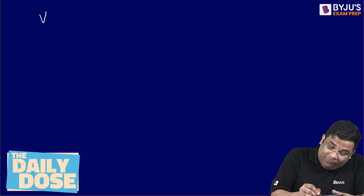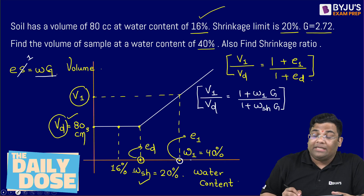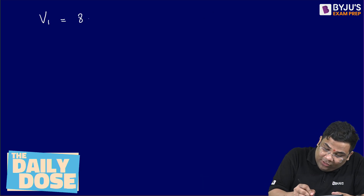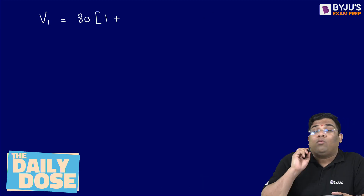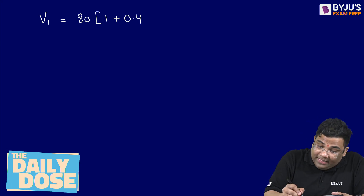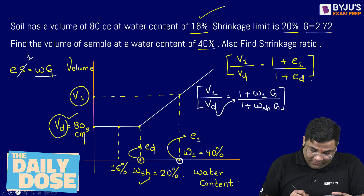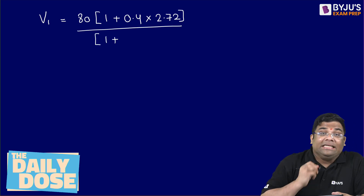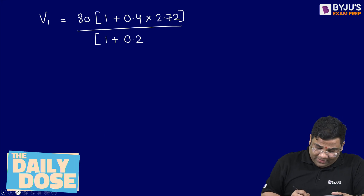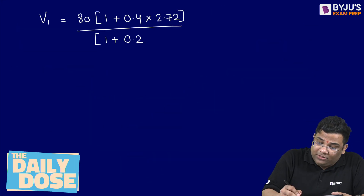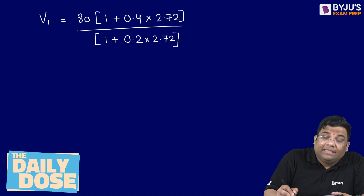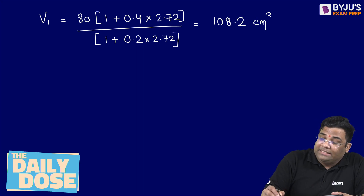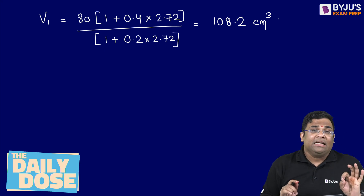V1 equals VD, which is 80 cc, multiplied by 1 plus W1 times G — that is 0.4 times 2.72 — divided by 1 plus the shrinkage limit times G, which is 0.2 times 2.72. Solving this, we get a volume of around 108.2 centimeter cube. That is the first part of the question answered.